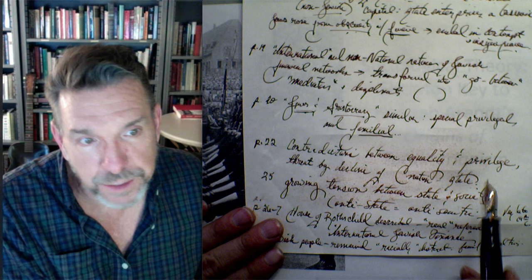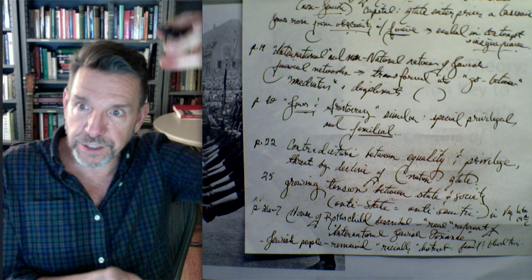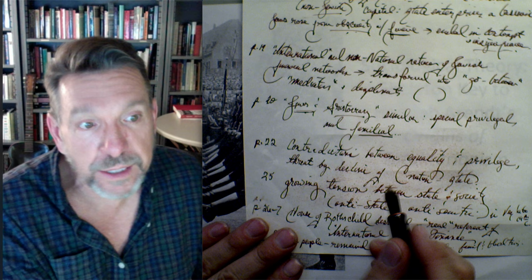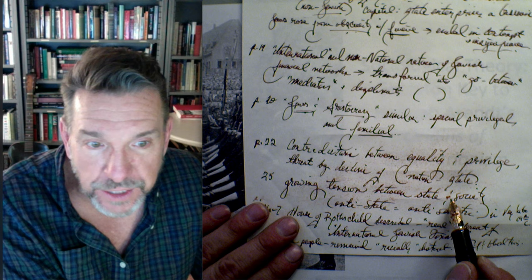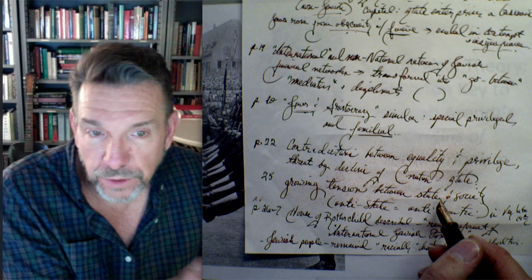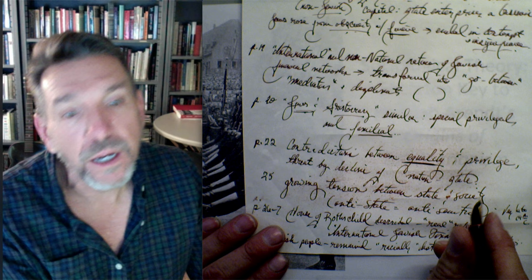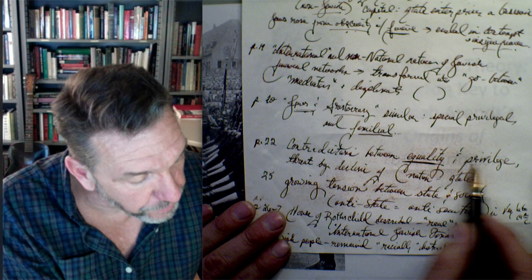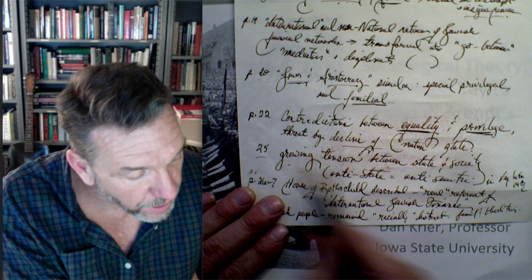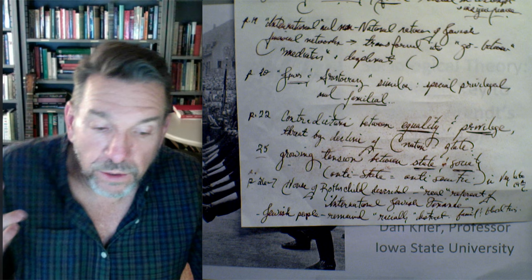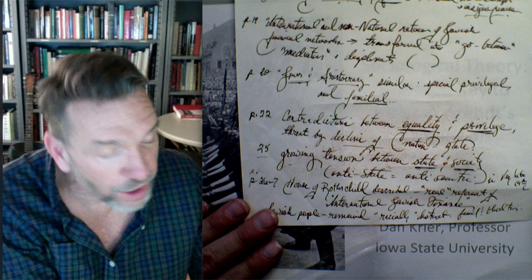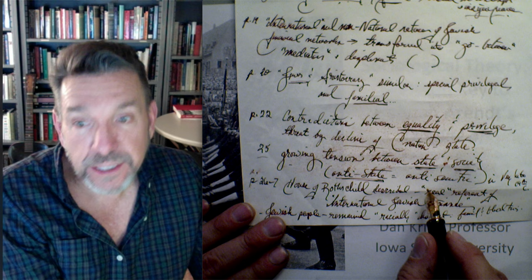Page 22: there's a contradiction between equality and privilege. As the nation state emerges and Jews are granted equality, they also lose privilege. Some loss of privilege is actually gain — the loss of disprivilege — but other losses are of privileged positions. As legal equality arrives, Arendt argues, you get growing tension and the emergence of what she calls social discrimination of a really virulent variety, because there are no longer legal barriers separating Jewish from non-Jewish people. Page 25: as the 19th century unfolds, reactionary and often antisemitic military elements are actually anti-state.